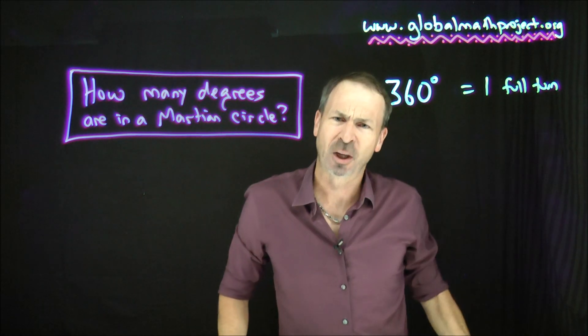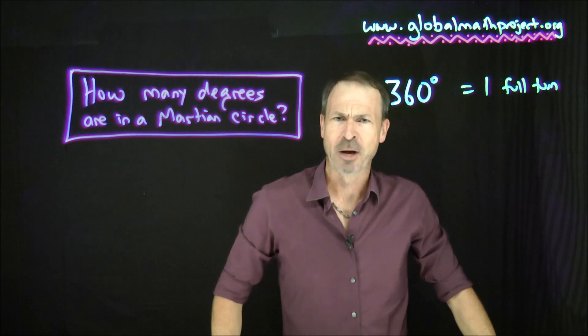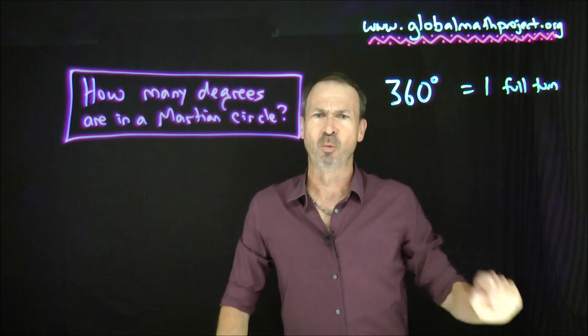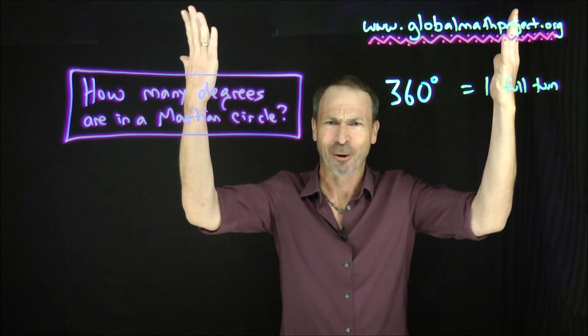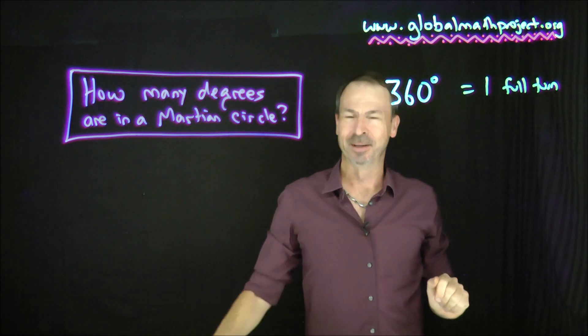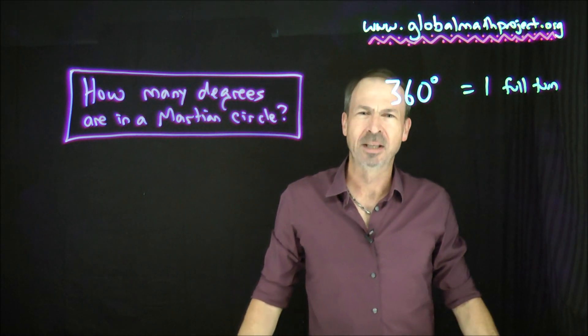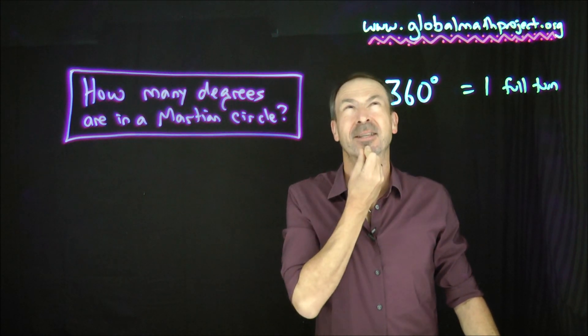So that actually now begs the question, put this aside for a moment: who chose the number 360 for the count of degrees in one full turn? It's kind of a weird number just to pull out of the air. Where's that coming from? So let's think about that. Let's focus on an earthling circle for a moment. So who chose the number 360 and why that number?